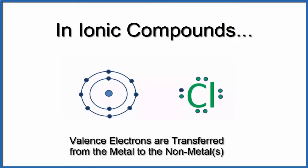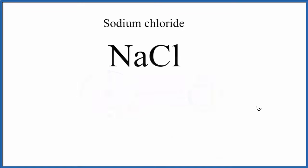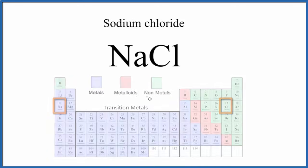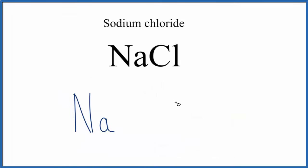Let's write some Lewis structures. We'll start with the iconic ionic NaCl. To write the Lewis structure for sodium chloride, NaCl, we first look at the periodic table. Sodium is a metal, chlorine is a nonmetal, so we have an ionic compound. Let's write Na and then Cl.